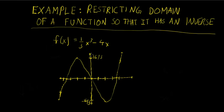In this video we are going to figure out how we can restrict the domain of the function f(x) = (1/3)x³ - 4x so that it has an inverse.